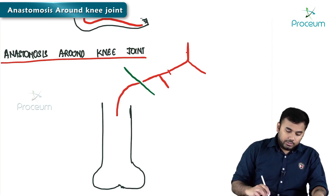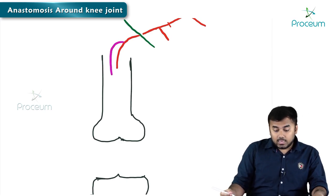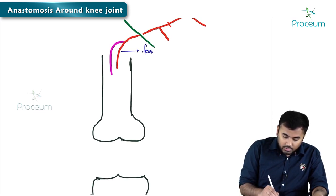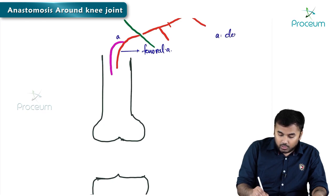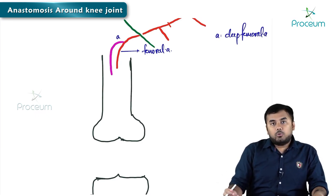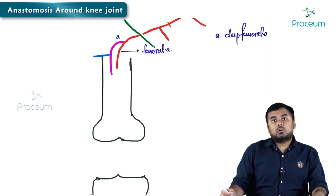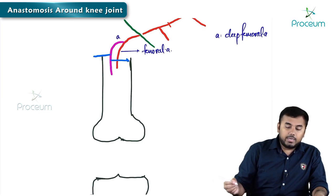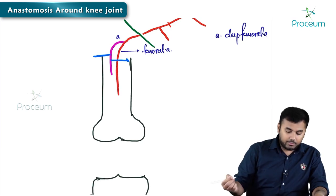Through this femoral artery, you see a short branch coming down. From the femoral artery, you see an artery coming down — this artery is called the deep femoral artery. This deep femoral artery has got two important branches: one branch going laterally is called the lateral circumflex femoral artery, and the other branch going medially is called the medial circumflex femoral artery.